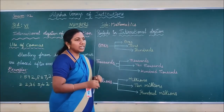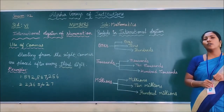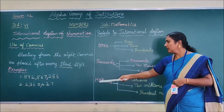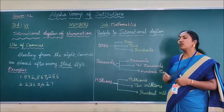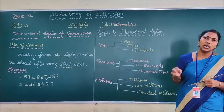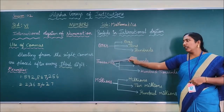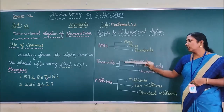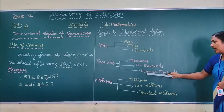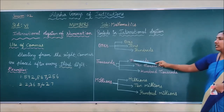Next you are going to see what are the periods in the international system of numeration. In the Indian system we have periods; similarly in the international system you also have periods. There are three periods: ones, thousands, and millions. What are the place values under the period of ones? As in the Indian system: ones, tens, hundreds. Under thousands: thousands, ten thousands, and hundred thousands. Hundred thousands is a new term you are seeing here.